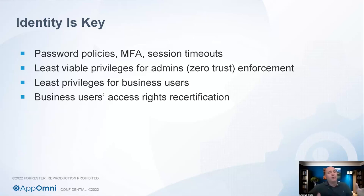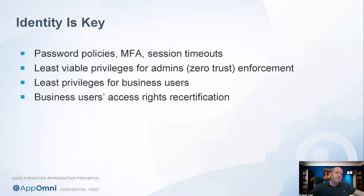Least viable privileges for admins is really zero trust enforcement. If you have, say, a data scientist, they don't need access to manage the role-based access control of a SaaS application or completely redo its policies. There's a certain level of privileges needed for someone to do their job, but a lot of times excessive privileges exist that give the user a lot more control over the entire SaaS application — which is really dangerous. If that user account gets taken over or hijacked, attackers will use it to create new buckets, create new instances, create new service areas, and steal data. The more you adhere to zero trust or least privileges for admin users, the lower the chance of a data breach.